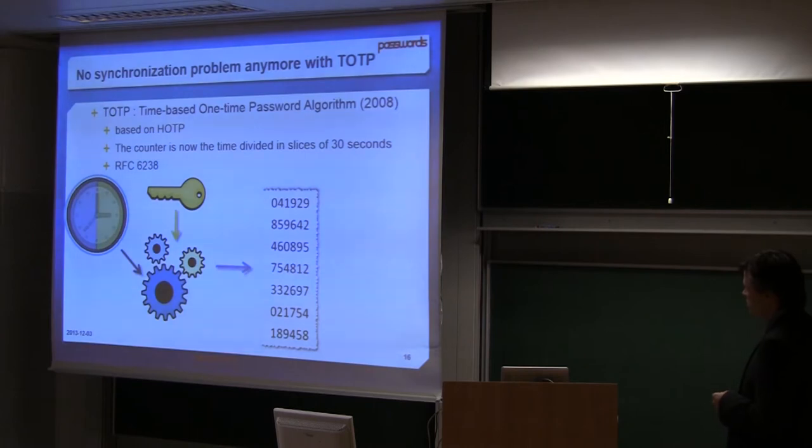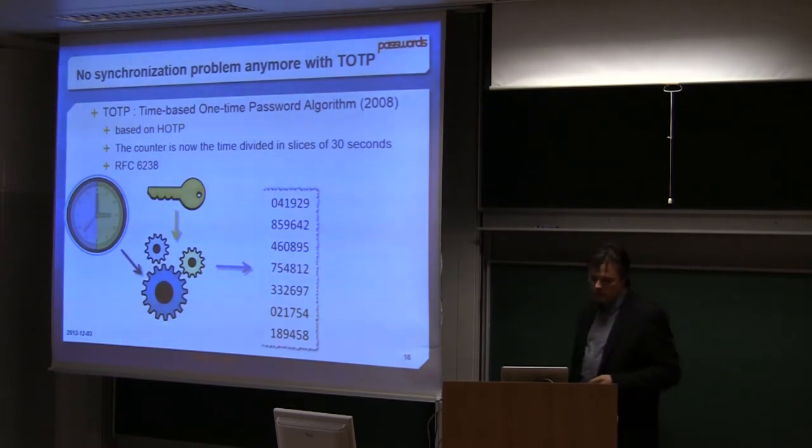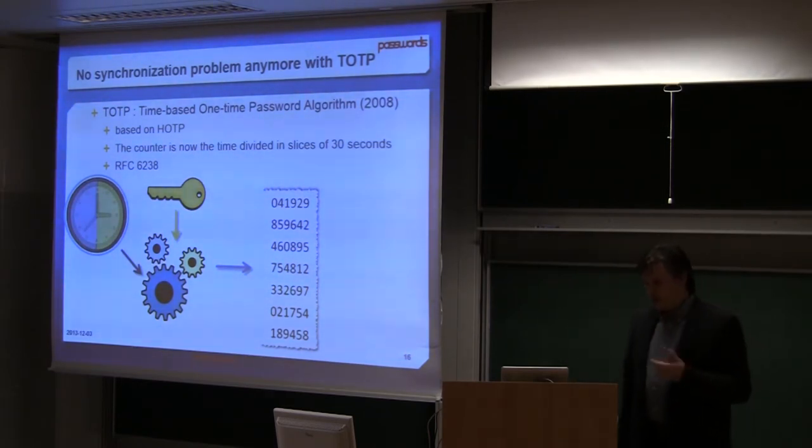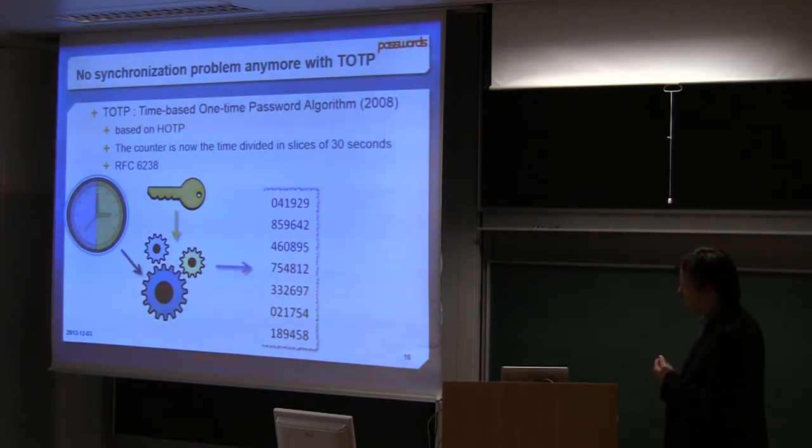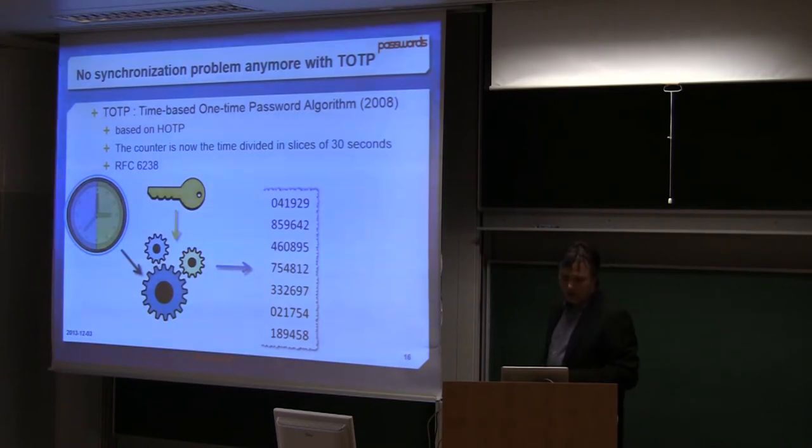It's based on the same HOTP algorithm, but now the counter is the time divided in 30 seconds or 60 seconds. You can choose its parameters. The computing of the token is still the same. You have the time divided in 30 seconds, you have your seed which is unique per token, and you make the hash. It could be the same if you have the same seed.